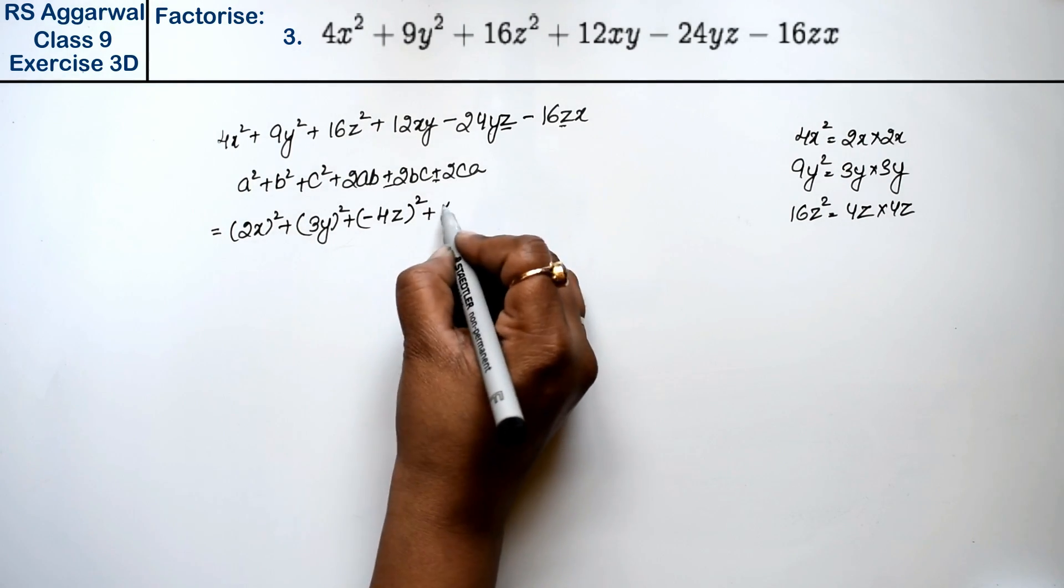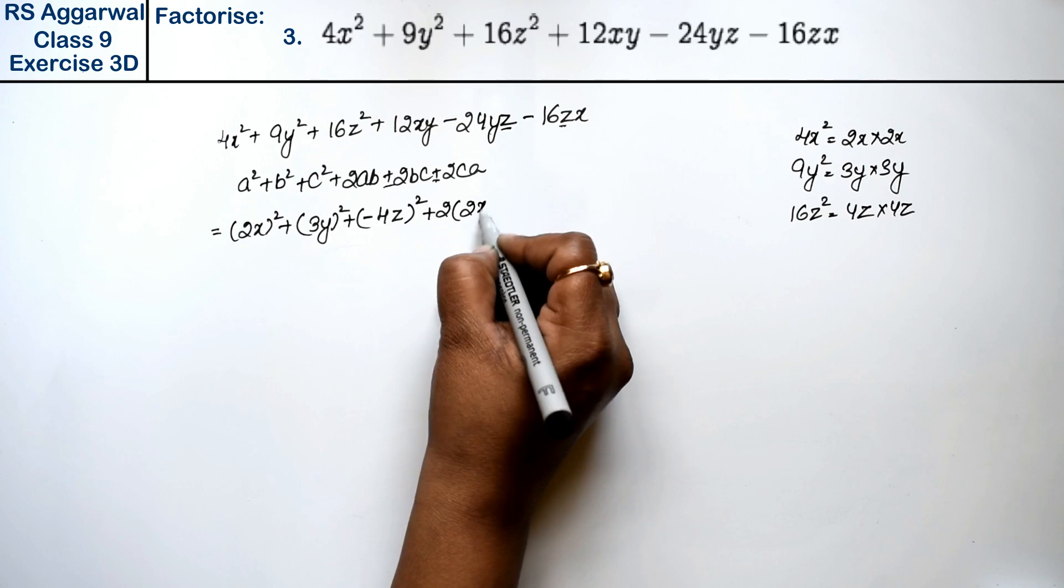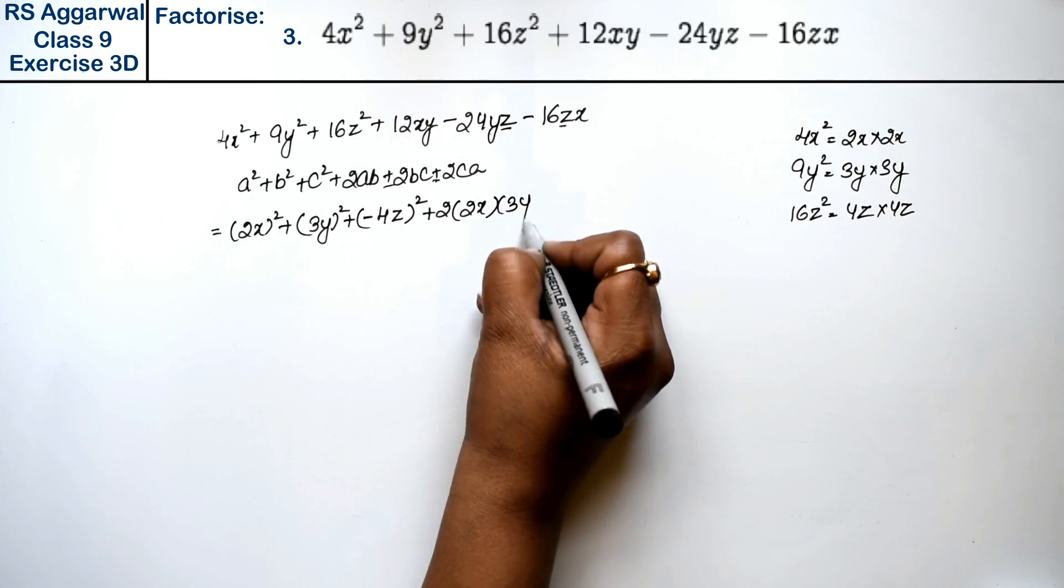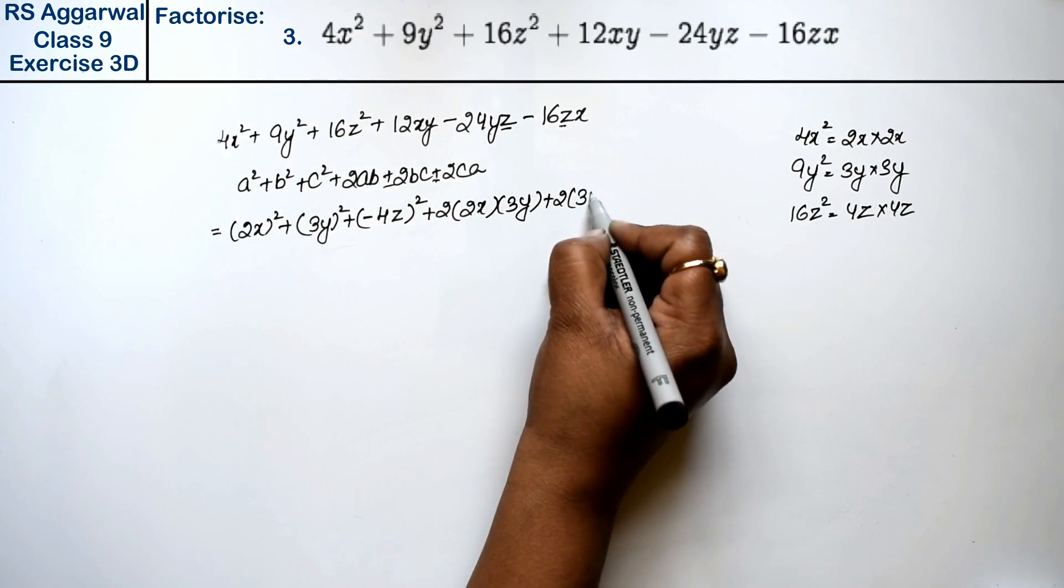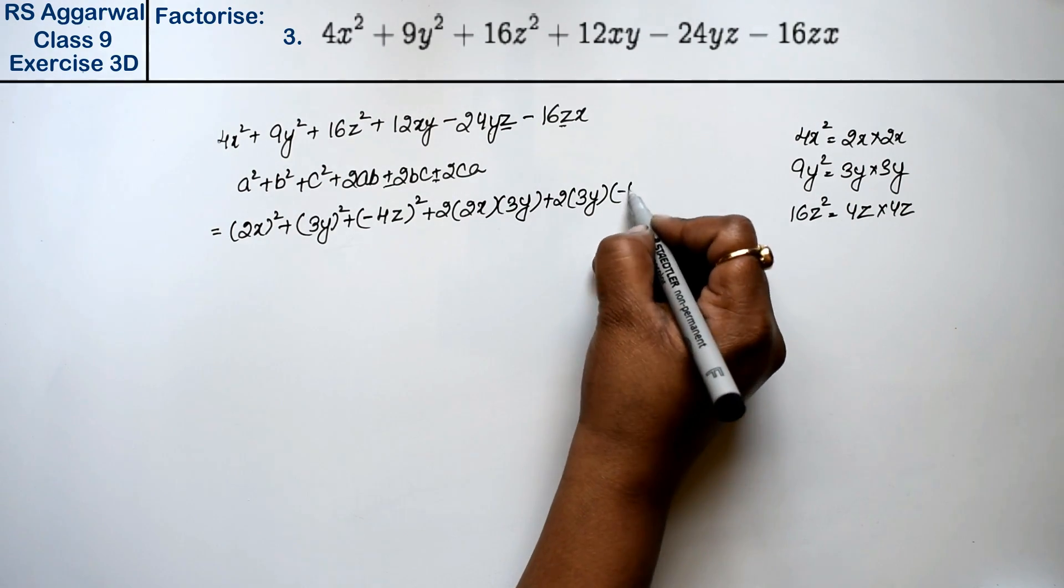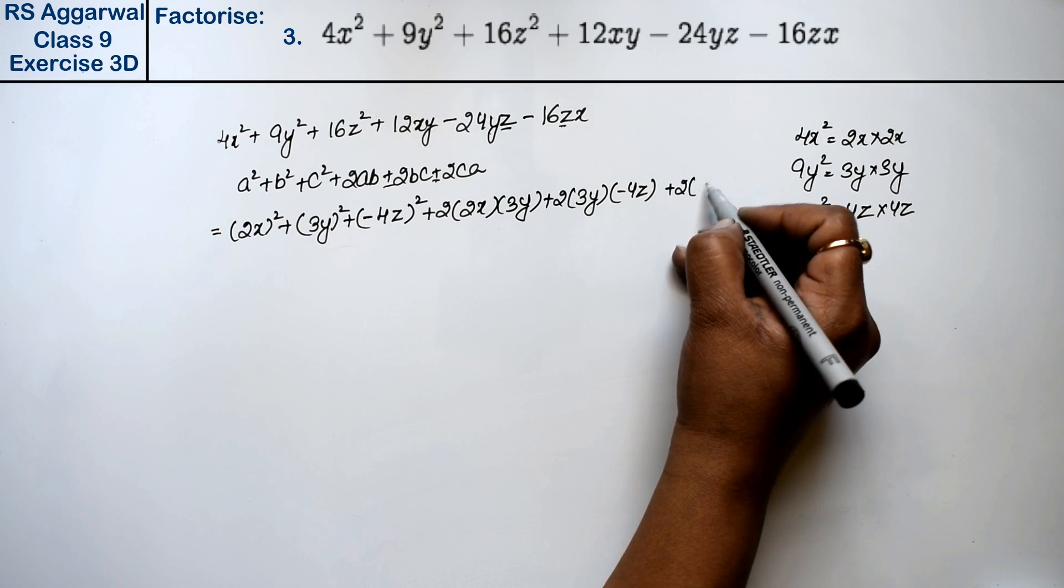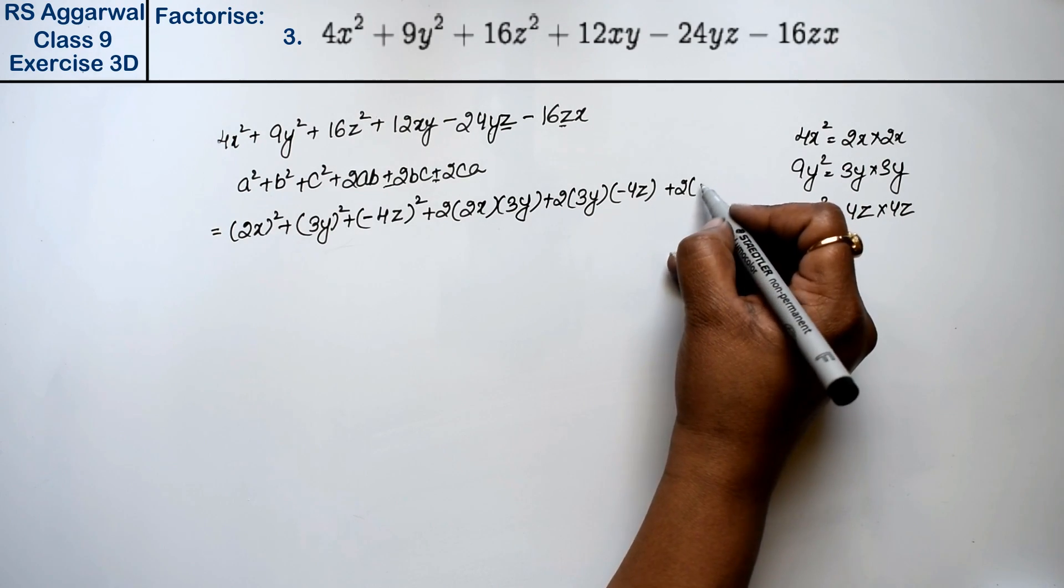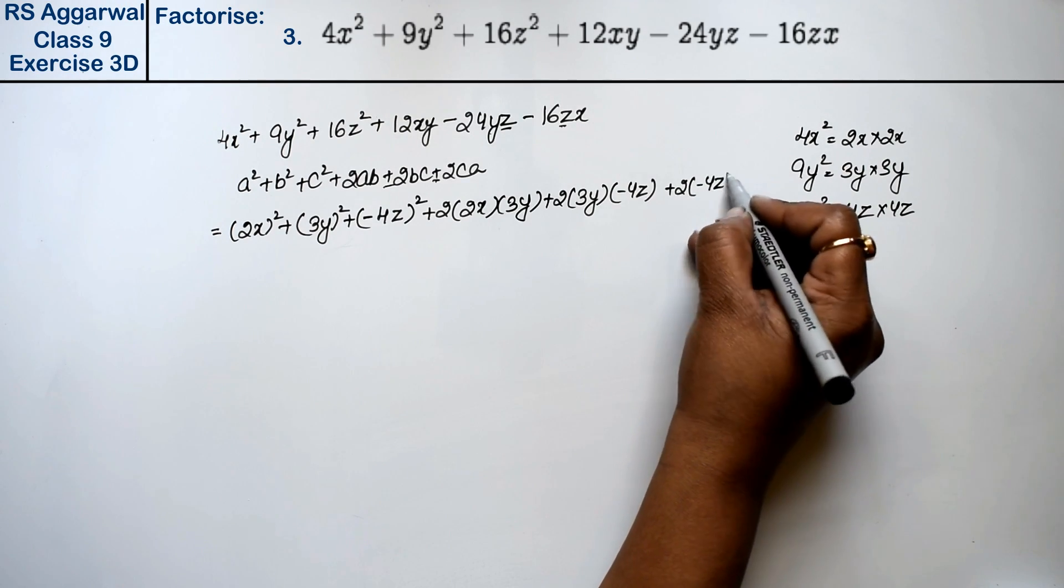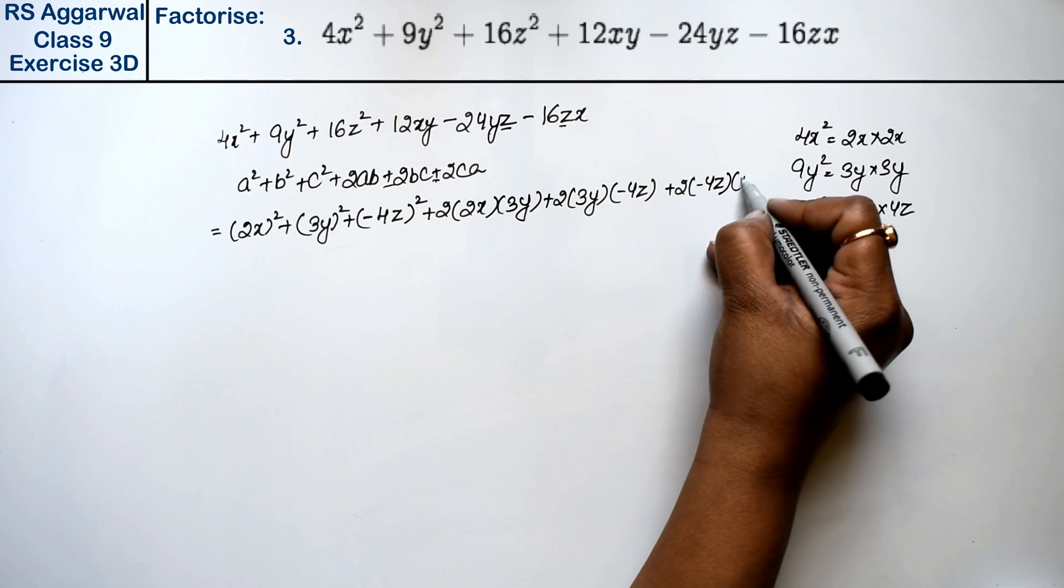Now plus 2ab: a is 2x, b is 3y. Plus 2bc: b is 3y, c is minus 4z. Plus 2ca: c is minus 4z, and a is 2x.